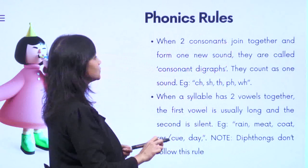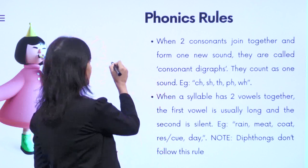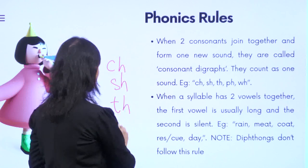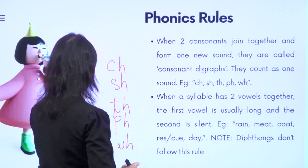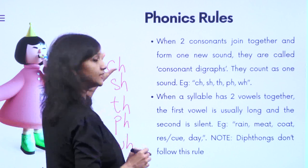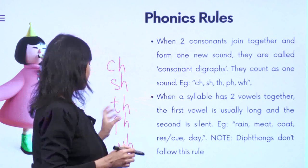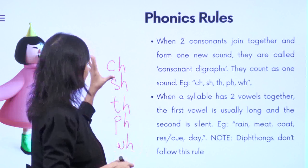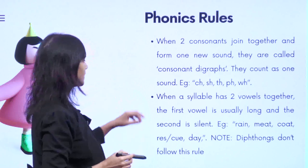Rule eight: when two consonants join together and form one new sound, they are called consonant digraphs. We have seen: CH, SH, TH, PH, WH. These consonants come together and make sounds like: CH is /ch/, SH is /sh/, TH is /th/ or /ð/, PH is /f/, and WH is /w/.